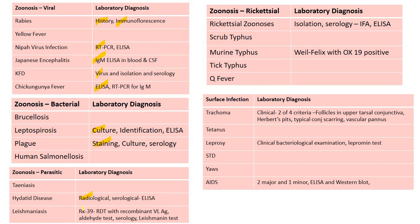Leishmaniasis: rK39 rapid diagnostic test; for visceral leishmaniasis — aldehyde test, serology, and leishmanin test. Rickettsial zoonosis: isolation, serology, immunofluorescent assay, ELISA. For murine typhus: Weil-Felix with OX-19 positive. Trachoma: clinical diagnosis using two of four criteria — follicles in upper tarsal conjunctiva, Herbert's pits, typical conjunctival scarring, and vascular pannus. Leprosy: clinical, bacterial examination, and lepromin test.